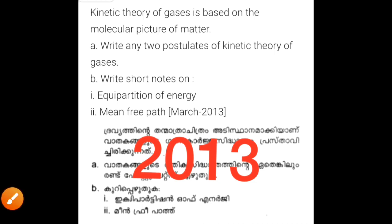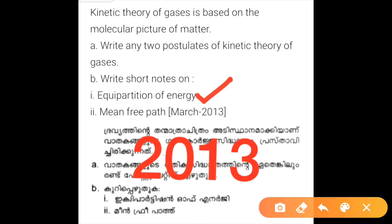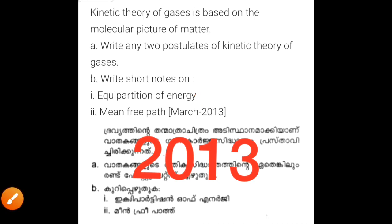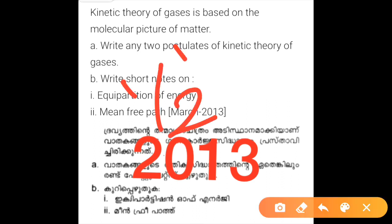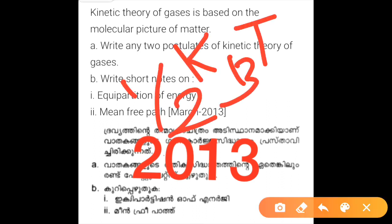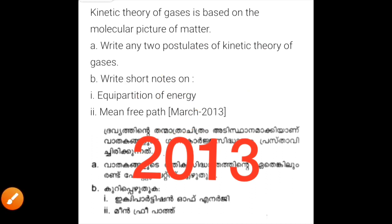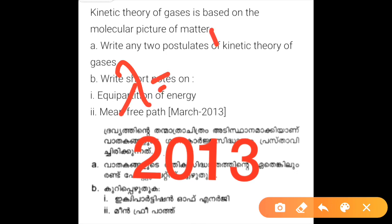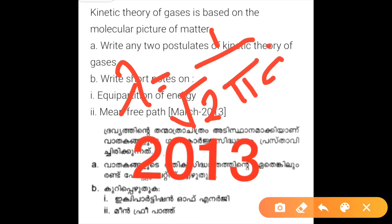The law of equipartition of energy states that for a molecule with f degrees of freedom, the energy associated with each degree of freedom is 1/2 kBT, giving a total energy of f/2 kBT. For a monoatomic gas there are 3 degrees of freedom. The mean free path is represented by lambda.